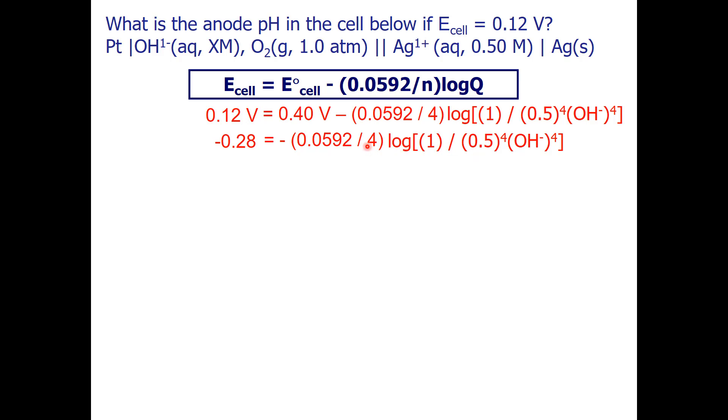Now, I'm going to multiply by 4 and divide by negative 0.0592, so now I have 18.919 equals log of my Q expression.